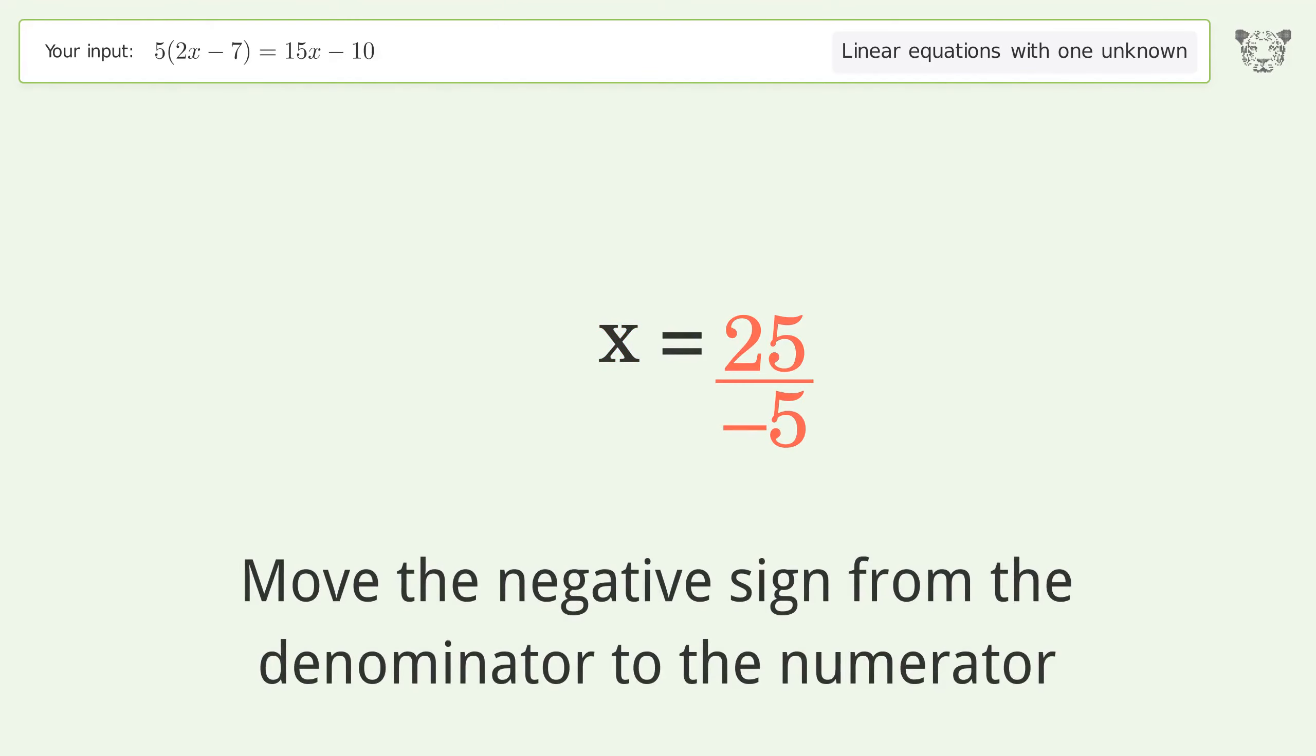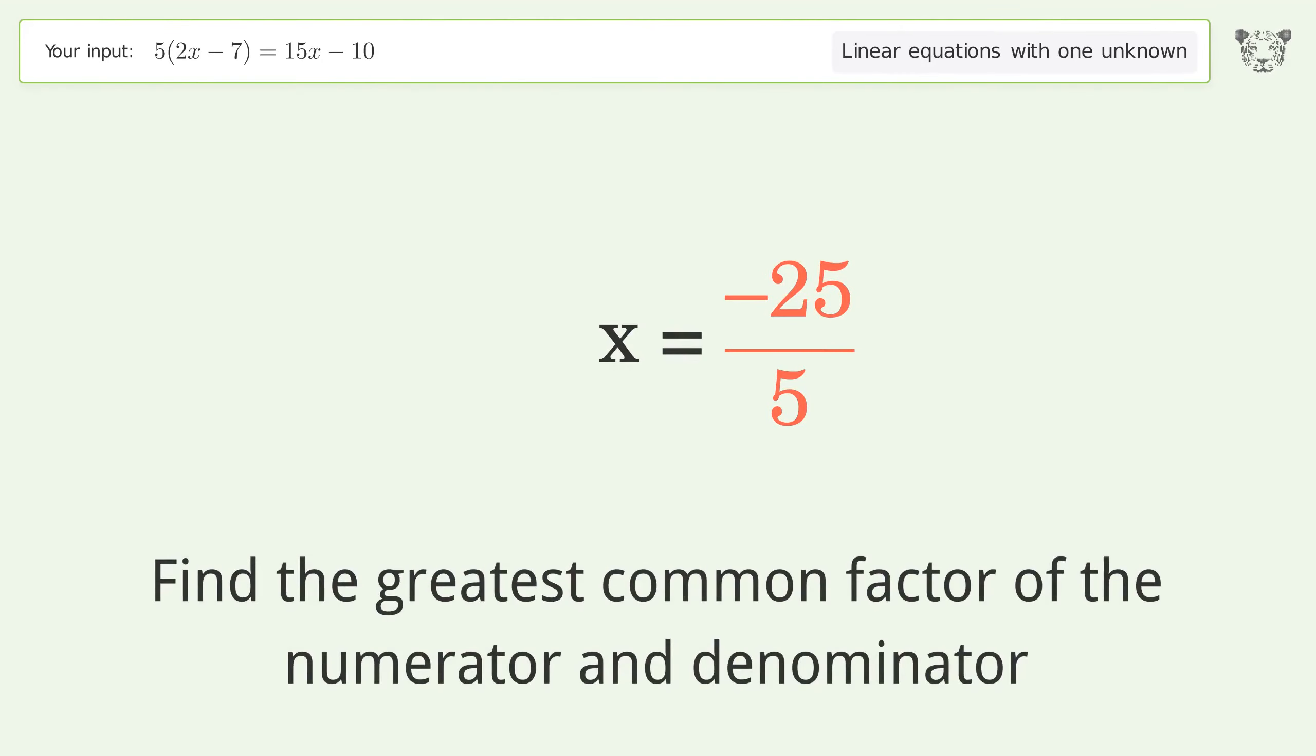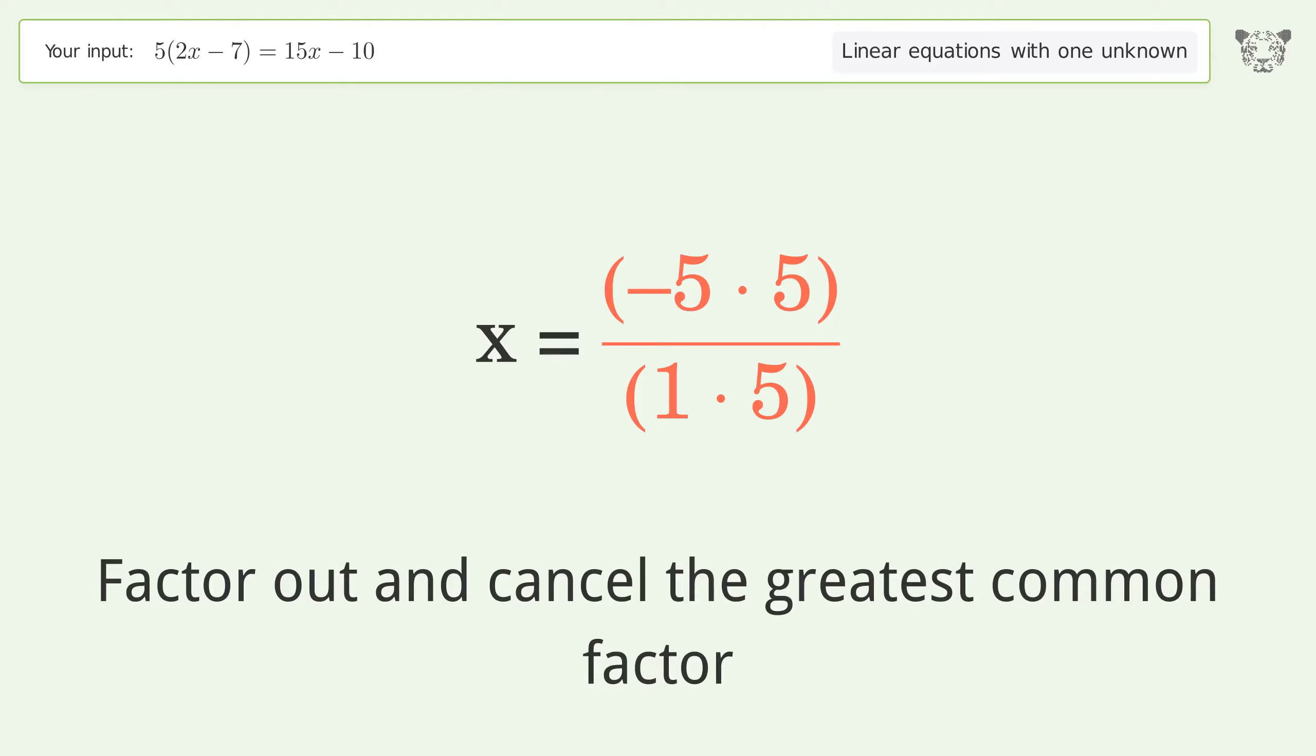Move the negative sign from the denominator to the numerator. Find the greatest common factor of the numerator and denominator. Factor out and cancel the greatest common factor.